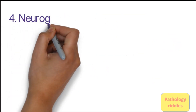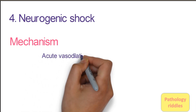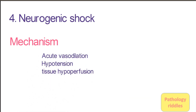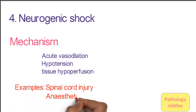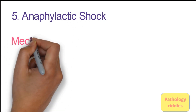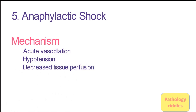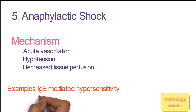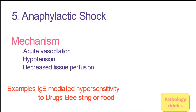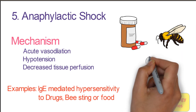The fourth type is neurogenic shock, where sudden vasodilation leads to decreased blood pressure, hypotension, and finally decreased tissue perfusion. This happens in spinal cord injury and anesthetic accidents. The fifth type is anaphylactic shock, with a similar mechanism of acute vasodilation, decreased blood pressure, and tissue hypoperfusion. It is mainly caused by IgE-mediated hypersensitivity reactions to drugs, bee stings, or food. These are the five types of shock.